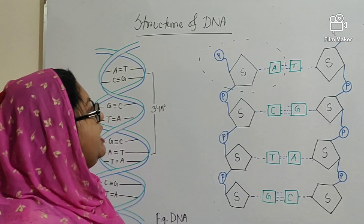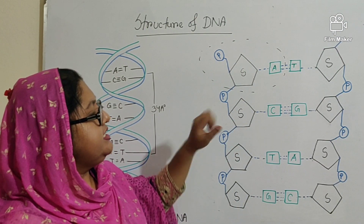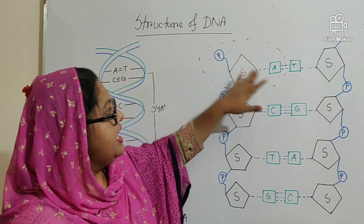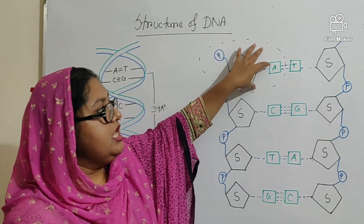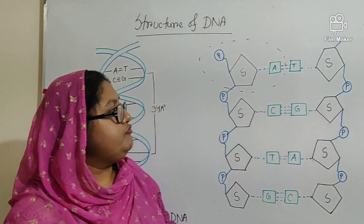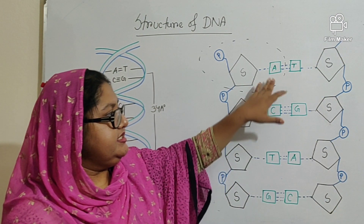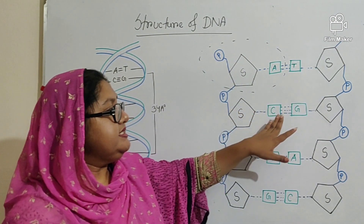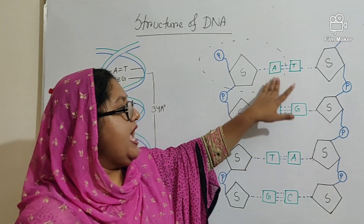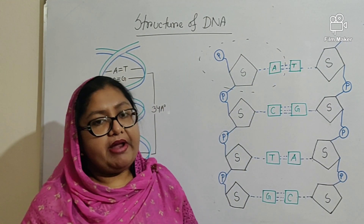Now the structure of DNA. DNA comprises nucleotides or polynucleotides. Here, deoxyribosugar — it is a 5-carbon sugar — nitrogen base, and inorganic phosphate are collectively called the nucleotide. The nitrogen bases are of two types: purine and pyrimidine. A indicates adenine, T indicates thymine, C indicates cytosine, G indicates guanine. Adenine and guanine are known as purine bases; cytosine and thymine are known as pyrimidine bases.